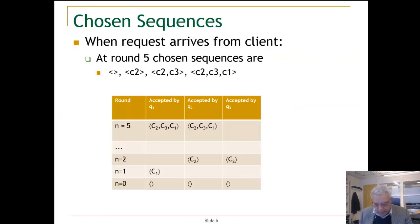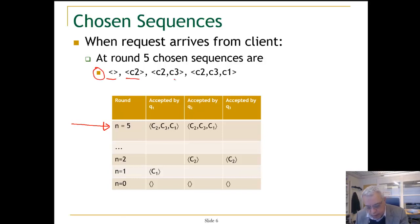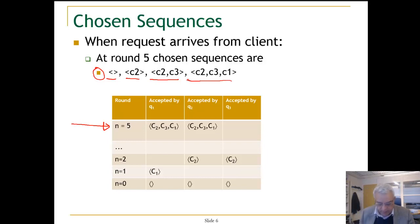Looking at this round, the empty sequence is chosen, the sequence C2 is chosen, the sequence C2 C3 is chosen, and the sequence C2 C3 C1 is chosen. The longest sequence chosen is this sequence, and it is accepted at round 5 here.